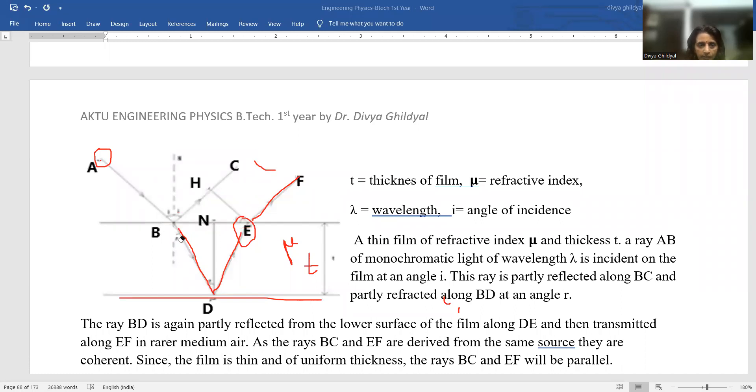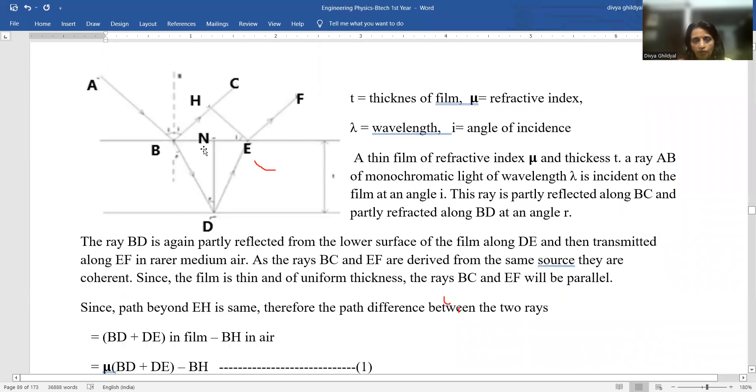Now let us derive an expression for path difference. Before we start deriving the expression, I will tell you a shortcut for the same. Look at the diagram again. AB is incident light, BC is reflected light, BD is refracted light, and DE is again reflected light, and EF is the emergent ray. A thin film of refractive index mu and thickness T is taken. AB, the monochromatic source of light of wavelength lambda is incident on it. Path beyond EH is same. And path difference between the two rays, that is, it is given by BD plus DE in the film. So I will take refractive index mu along with it. And BH, the additional path traveled in air.